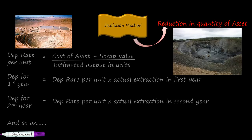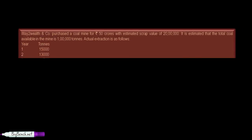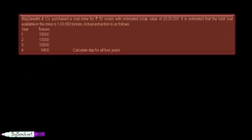Let us have a small problem based on this method. Way2Wealth and Company purchased a coal mine for 50 crores with estimated scrap value of 20 lakhs. It is estimated that the total coal available in the mine is 1 lakh tons. The measure of unit is tons. Actual extraction is as follows—they have given 4 years and the actual extractions for all the 4 years. Calculate depreciation for all 4 years.